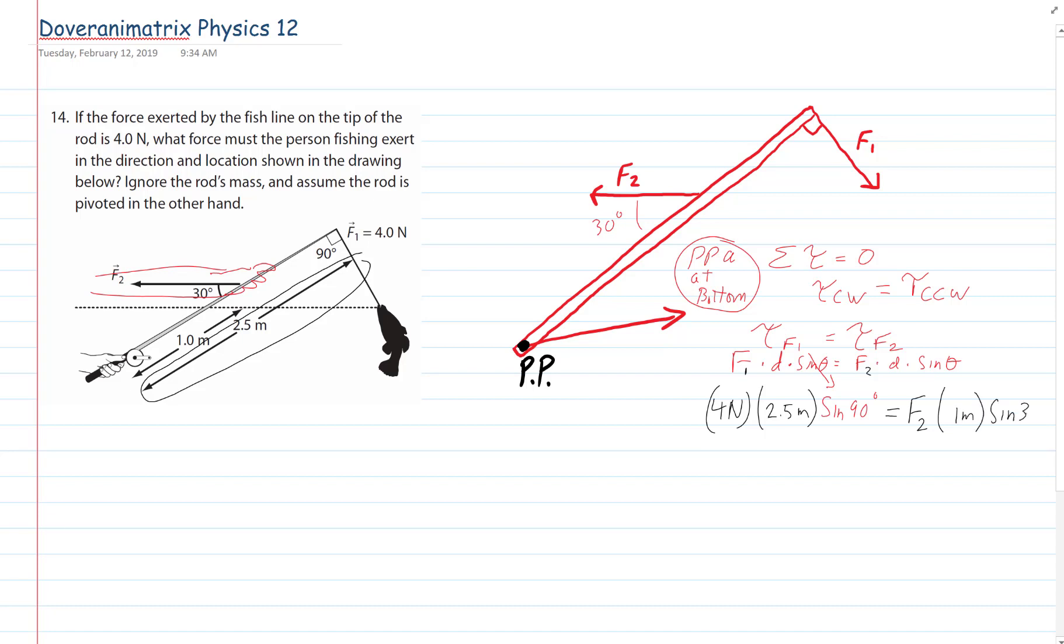And that has to equal F2, which we don't know or asked for. The distance to F2 is 1 meter. And it's the sine of 30 degrees. It is the sine between the two vectors. One, two that you really don't see here.